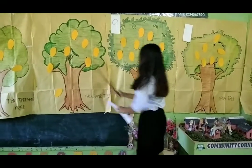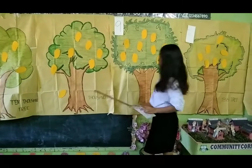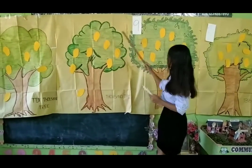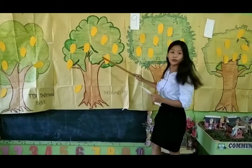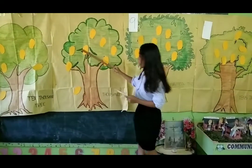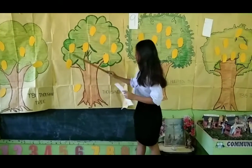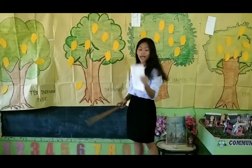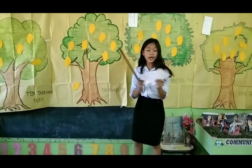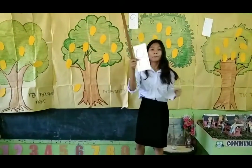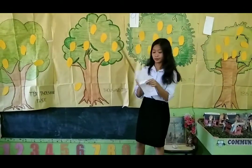Then, the thousands tree: 1, 2, 3, 4, 5, 6, 7, 8. The thousands tree has 8 fruits.